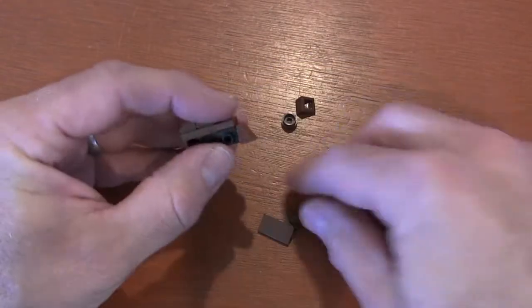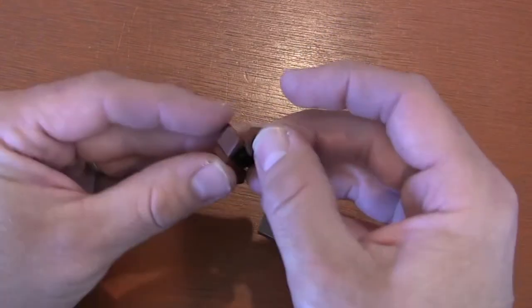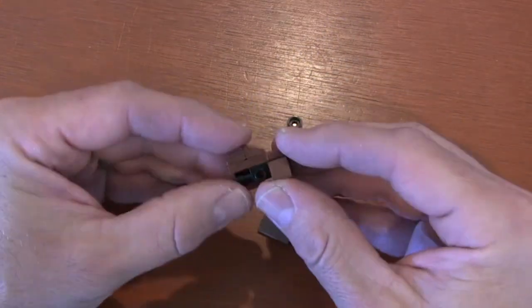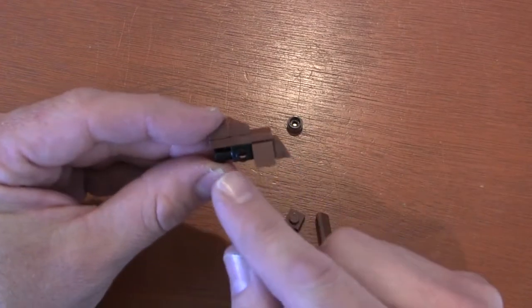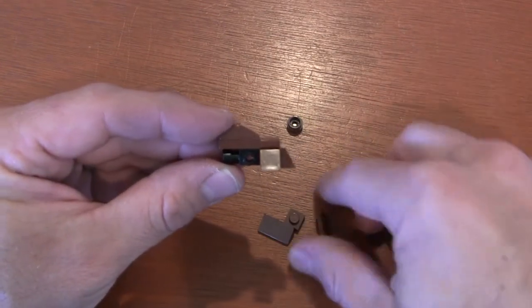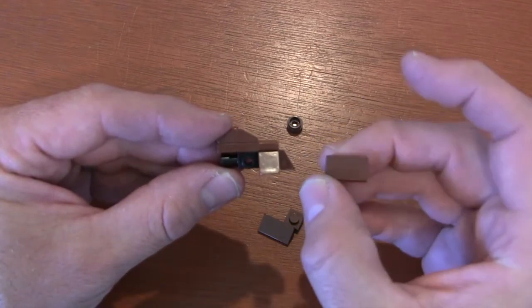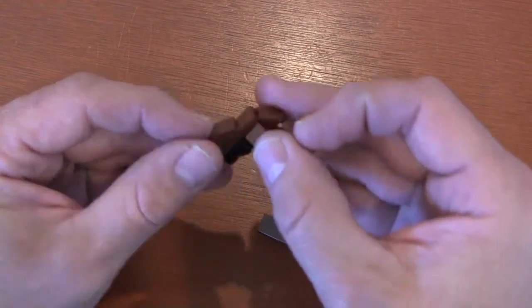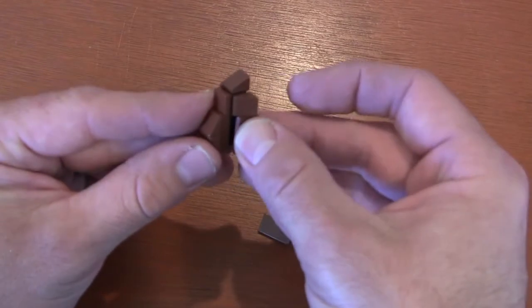Here we're going to change things up. Lego just put another one of these little cheese wedge slopes there, but to me it made it look incomplete. So what I'm doing is getting a one by two slope with the same positioning.